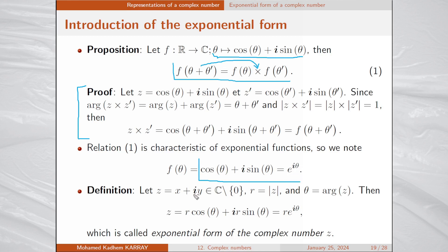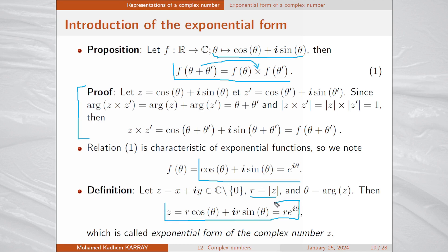So we may denote cos θ + i·sin θ in the form e^(iθ). This leads to the following definition: let z be any complex number different from zero with modulus r and argument θ. Then z may be written in trigonometric form r·cos θ + i·r·sin θ, but also in exponential form r·e^(iθ).